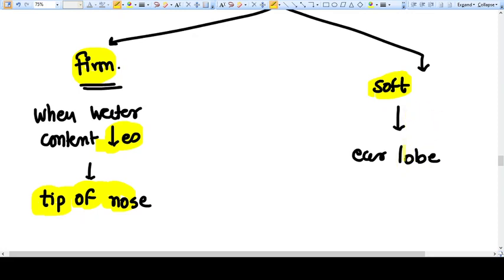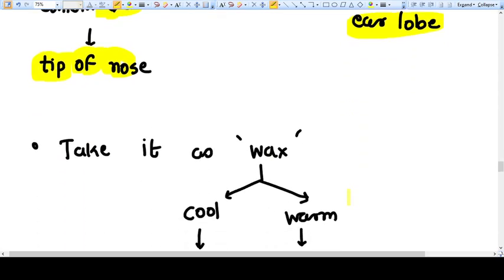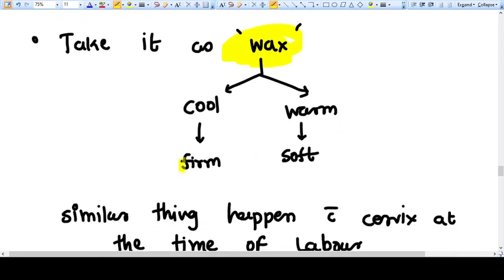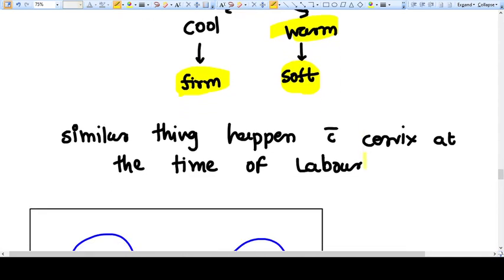You can also take an example of wax. If wax is cool, it is firm, and when it is warmed, it becomes softer and thinner. A similar thing happens with the cervix.